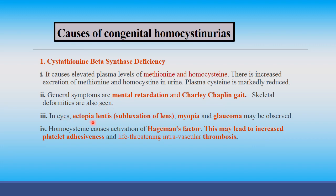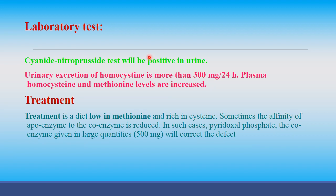Symptoms include mental retardation, Charlie Chaplin gait-like symptoms, skeletal deformities, and in the eyes: ectopia lentis (subluxation of the eye lens), myopia, and glaucoma. Homocysteine causes activation of Hageman's factor, which may lead to increased platelet adhesiveness and life-threatening intravascular thrombosis.